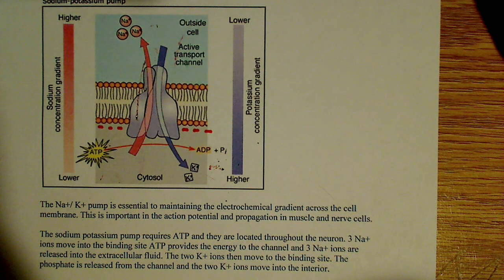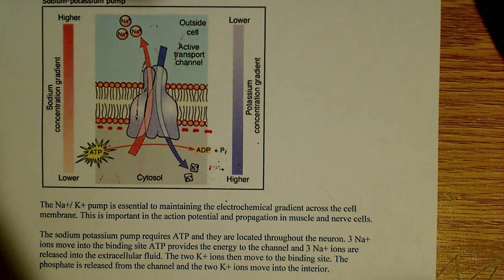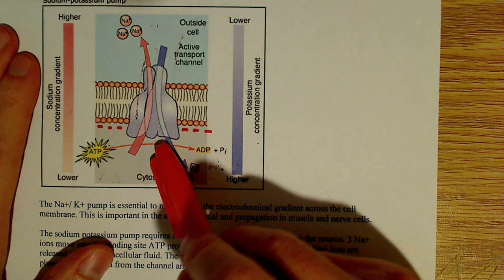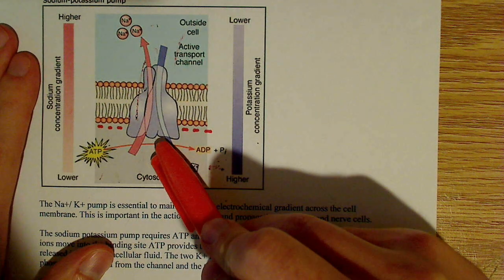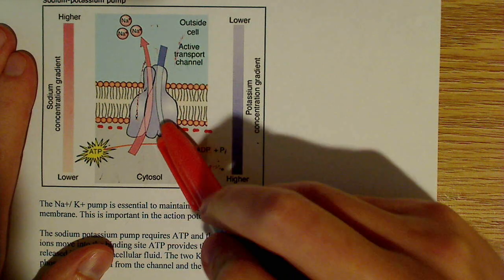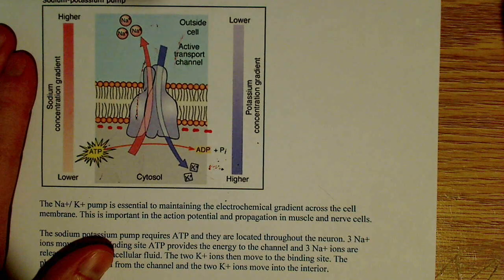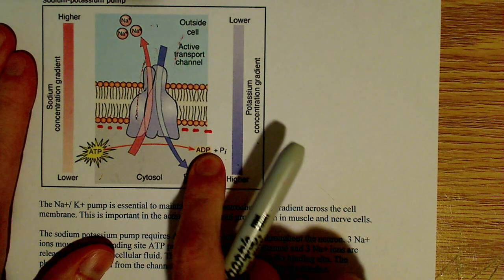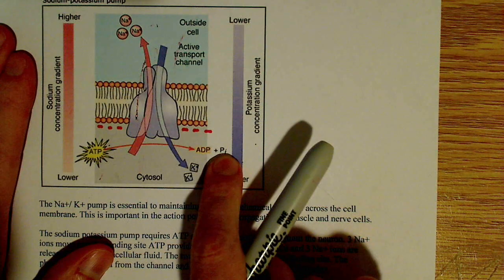Na+ binds to the pump at sites exposed inside the cell. So I'm inside the cell here, sodium is going to bind inside the cell, and this activates the ATPase. That activates this membrane protein. And what ends up happening here is ATP is split or hydrolyzed to ADP and Pi.